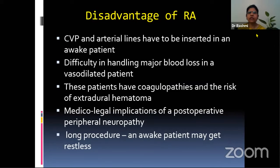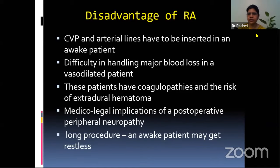What is the disadvantage of regional anesthesia? CVP and arterial lines have to be inserted in an awake patient. There is difficulty in handling major blood loss in a vasodilated patient. These patients have coagulopathies and the risk of extra-dural hematoma is high. There is also medico-legal implication of post-operative peripheral neuropathy, especially in diabetic patients. And it's a long procedure, so an awake patient may get restless.